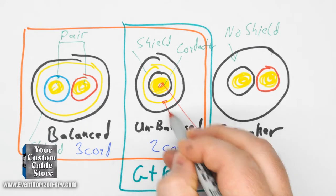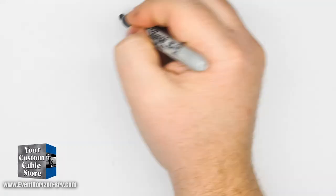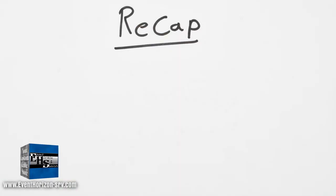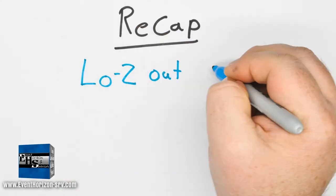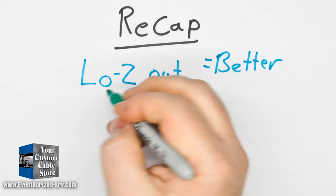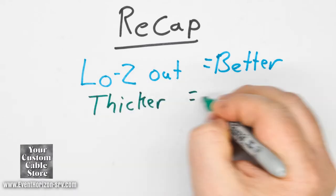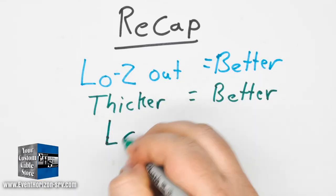To recap from test one, we know that low impedance output is better for tone with a longer cable. And from test two, a thicker cable performs better but it might be because of a lower capacitance.